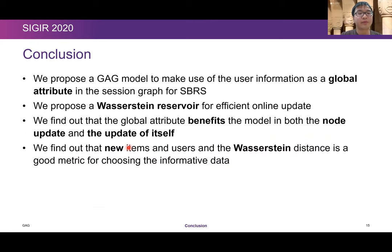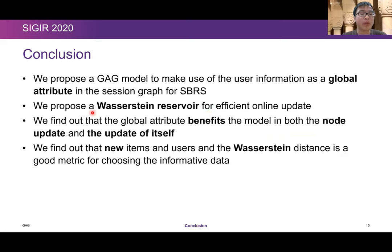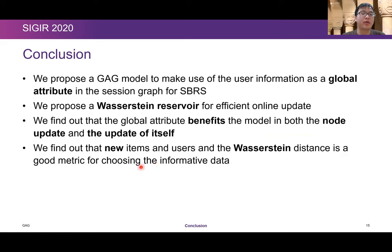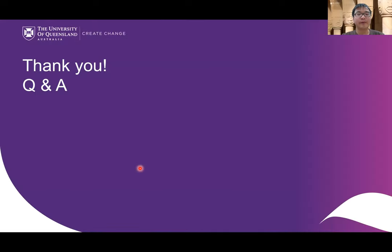In conclusion, we propose the GAG model to make use of user information as global attributes in the session graph for session-based recommendation. To adapt to the streaming setting, we also propose a Wasserstein reservoir for efficient online updates of our static model. We find that the global attribute benefits the model in both node feature updates and its own update. Sessions with new items and sessions with bad results based on the Wasserstein distance calculation are a good metric for choosing informative data to retrain our model. Thank you everyone for listening.